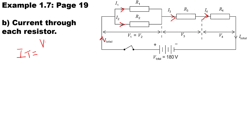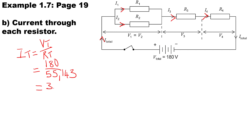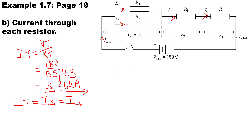The total voltage is given as 180 volts — it's a DC circuit. The total resistance from the previous video is 55.143 ohms. Don't forget to round off to three decimal places. Therefore, the total current is going to be 3.264 amps. It's important to note that the total current is the same as the current through the third resistor and the same as the current through the fourth resistor.